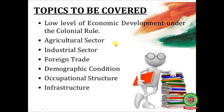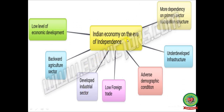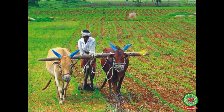Topics to be covered under 'Indian economy on the eve of independence' include: low level of economic development under colonial rule, agricultural sector, industrial sector, foreign trade, demographic condition, occupational structure, and infrastructure. The features were: backward agriculture sector, underdeveloped industrial sector, low foreign trade, adverse demographic condition, underdeveloped infrastructure, and more dependency on the primary sector occupation structure due to the decaying of the handicraft industry.